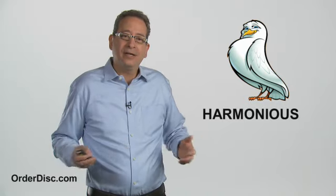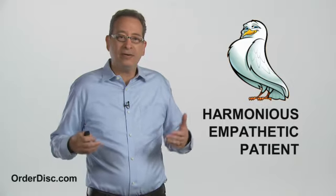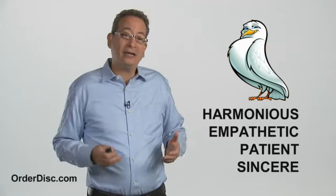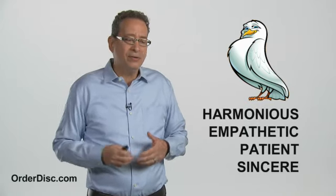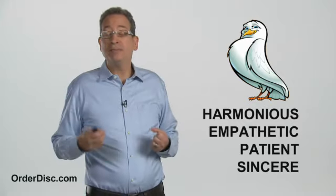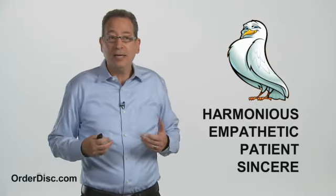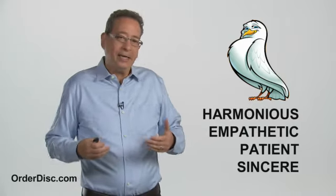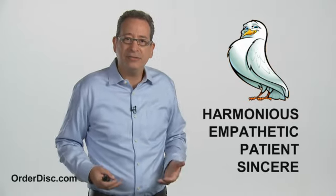Doves are a whole different type of energy. Doves try to create harmony in all relationships. So doves are empathetic, they are patient, and they come across as very sincere. Whereas eagles and parrots are extroverted, doves are actually quite introverted. Doves don't have to raise their voice in order to get something done. Doves don't have to draw attention to themselves in a classic way in order to be very influential. Doves tend to work behind the scenes and build strong, trusting relationships.